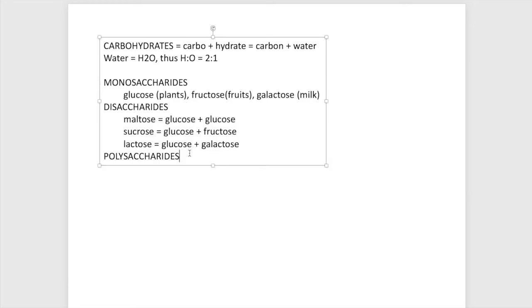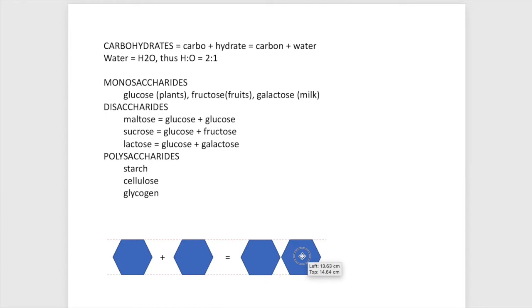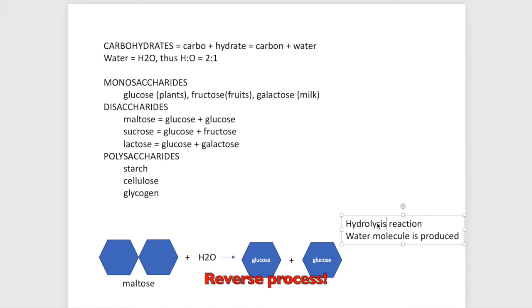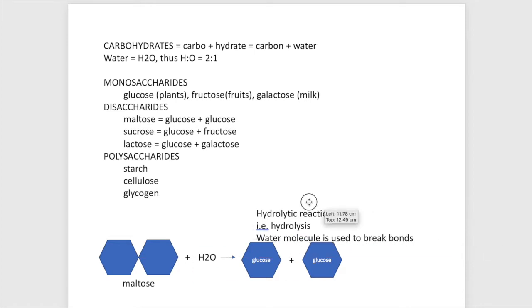Disaccharides are formed by a condensation reaction — a glucose molecule and another glucose molecule come together, are chemically combined, and a molecule of water is expelled. This is called a condensation reaction. To split them, they undergo hydrolysis: one molecule of water is provided and the bond is cleaved. This hydrolytic reaction is controlled by an enzyme, maltase. So maltose with water, under the influence of maltase, will become two glucose units.